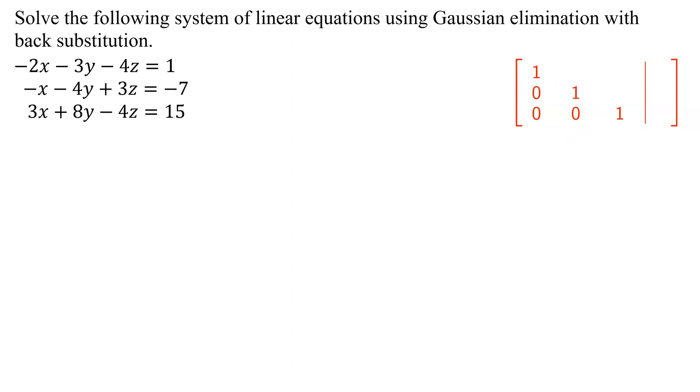So the first thing we need to do is write our augmented matrix. Is the system set up correctly? X's, y's, z's equals constants. Yes, everything's set up correctly, so we're ready to write our augmented matrix. Stripping off the coefficients, I'm going to get negative 2, negative 3, negative 4, then my vertical bar and my constant on the other side of 1.